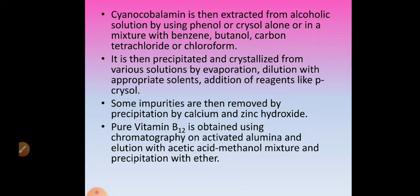The cyanocobalamin is precipitated and crystallized out. Any remaining impurities are removed by precipitation with calcium and zinc hydroxide. Once all impurities are removed, we get pure vitamin B12. This pure vitamin B12 is further purified by performing chromatography on activated alumina and elution with acetic acid-methanol mixture, or precipitation with ether, ether-acetone mixture, or ethanol-acetone mixture.